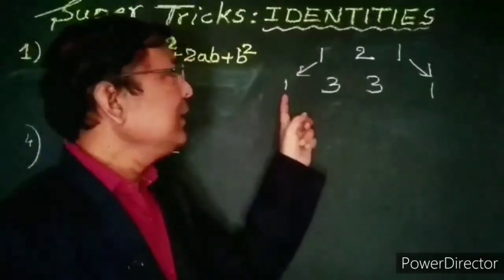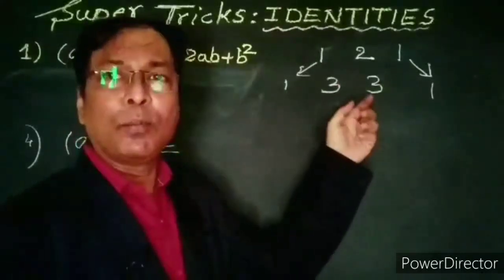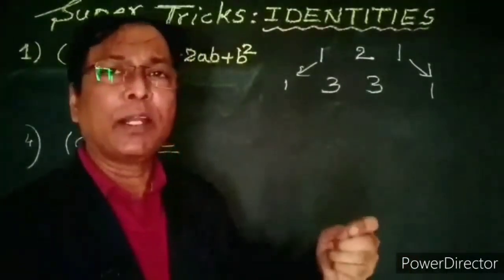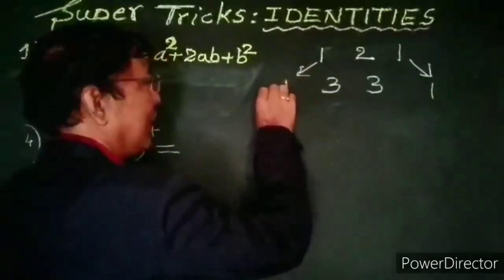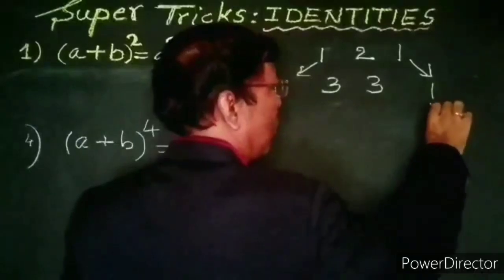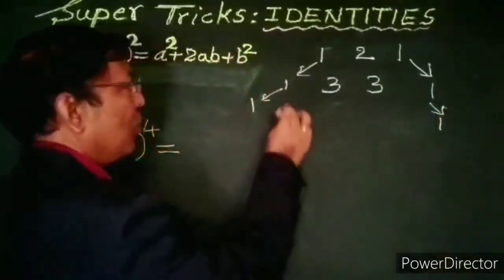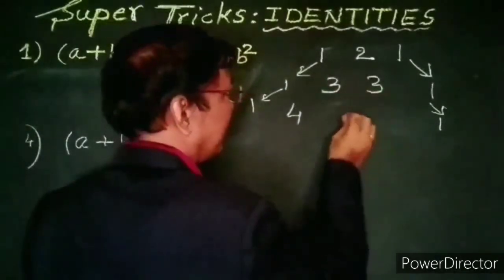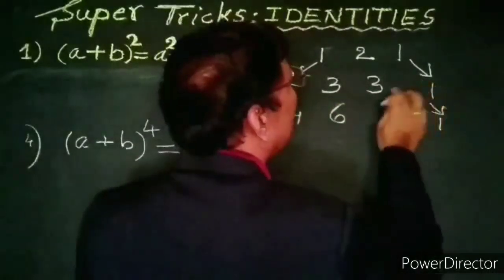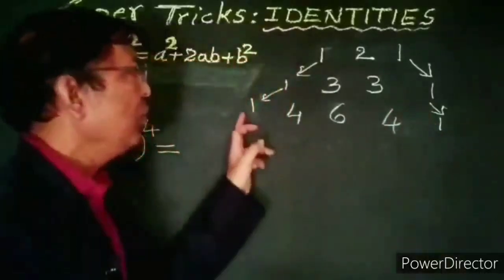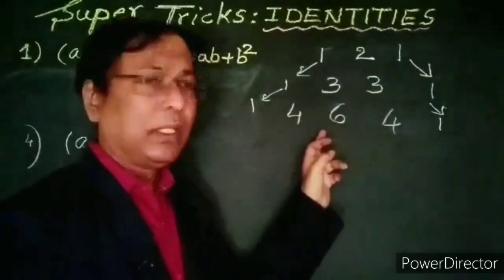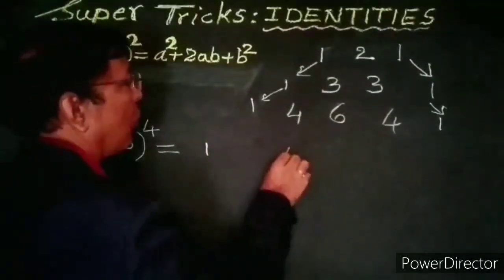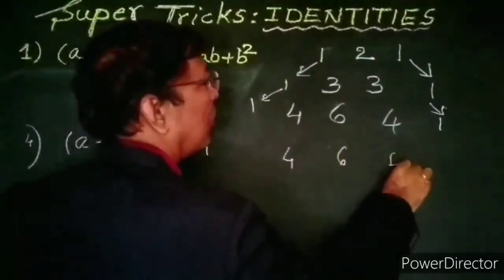We have already seen that the coefficients for (a+b)³ are 1, 3, 3, 1. Now for (a+b)⁴, we write 1 on each end, and add adjacent pairs: 1+3=4, 3+3=6, 3+1=4. So the five coefficients for (a+b)⁴ are 1, 4, 6, 4, 1.